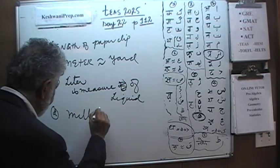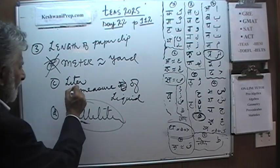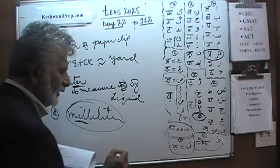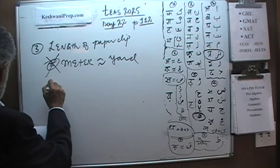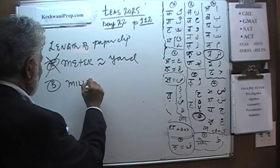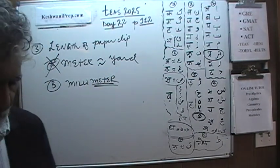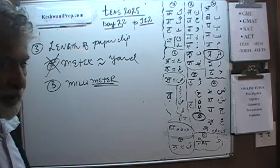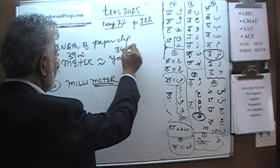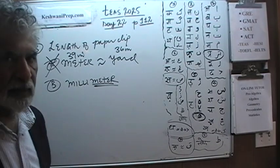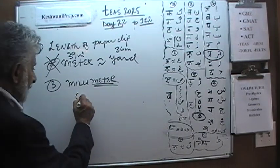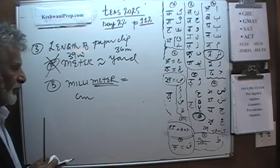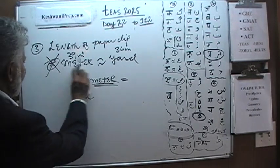Answer choice D is milliliter. Milliliter is one-thousandth of a liter, and liter is a measure of liquid, so milliliter is also a unit for measuring liquid — not length. The answer is B: millimeter. A meter is about a yard — 39 inches — but we're not using the meter itself. A millimeter is one-thousandth of a meter, and that's quite appropriate to measure the length of a paper clip.